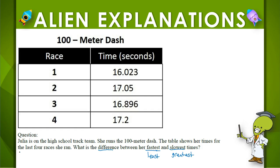Looking at these numbers, I have 16, 17, 16, and 17. So one of the 16s will be the least. Looking at the 16-second times: one has 0 tenths and the other has 8 tenths. So I can tell right now that the one with 16 and 0 tenths is going to be the least — that's her fastest time.